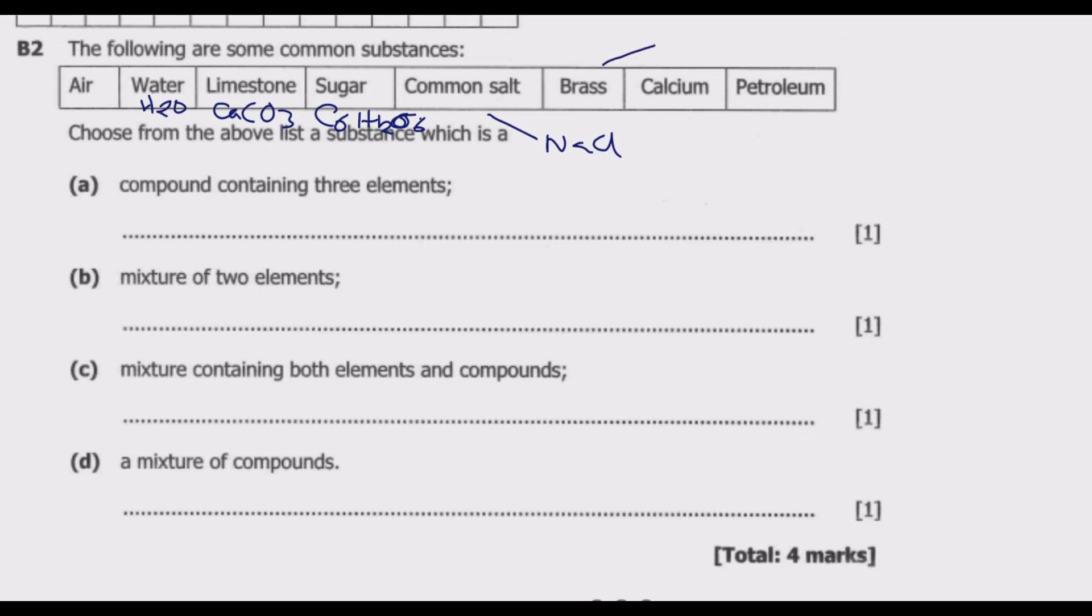Then we have brass which is basically an alloy made of a mixture of copper and zinc. Then we have calcium which is basically an element. Then we have petroleum which is basically a mixture of compounds which are these fossil fuels.